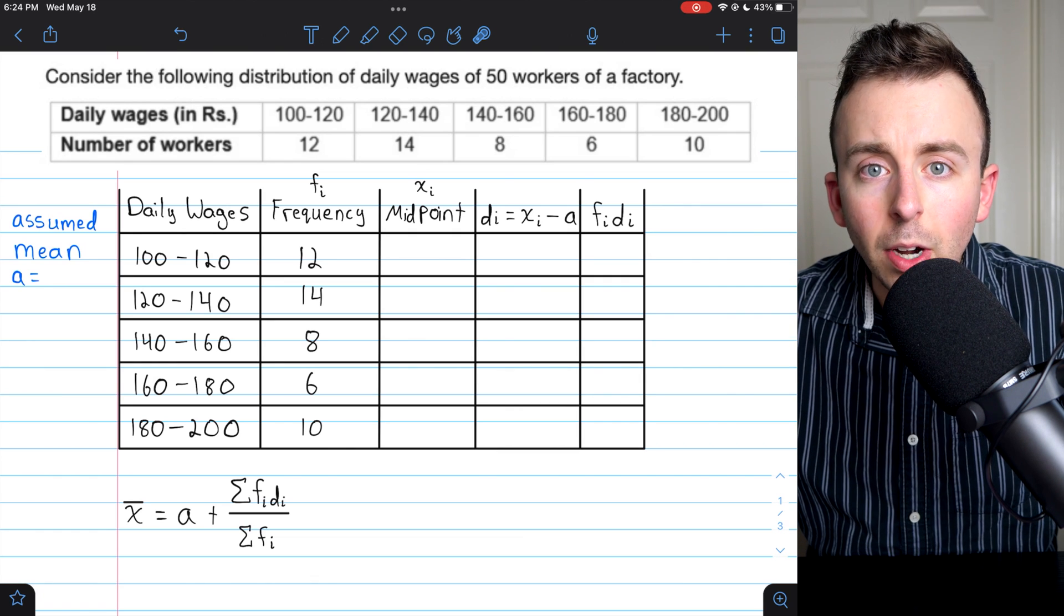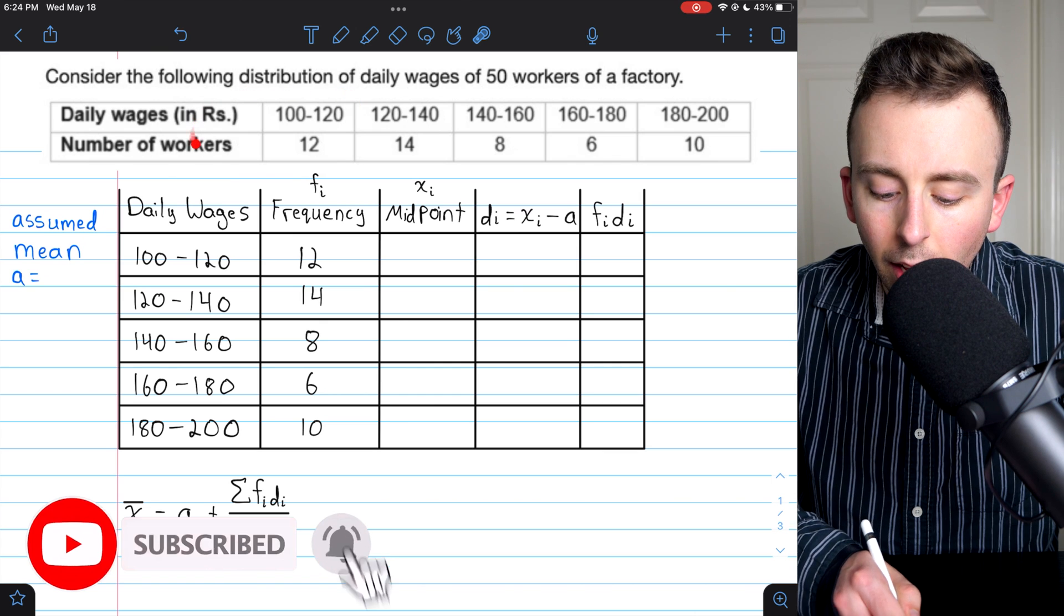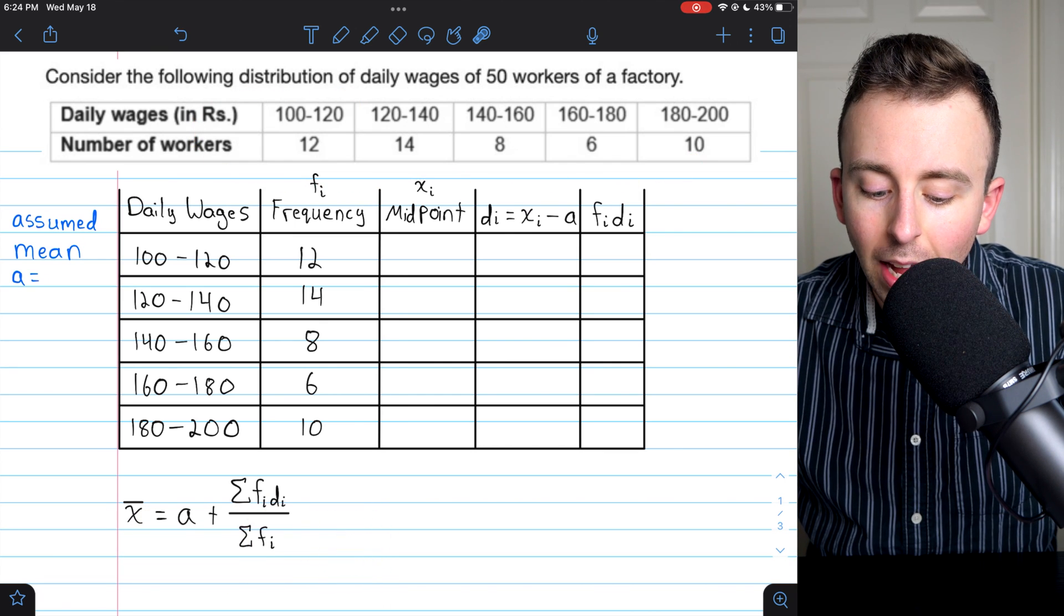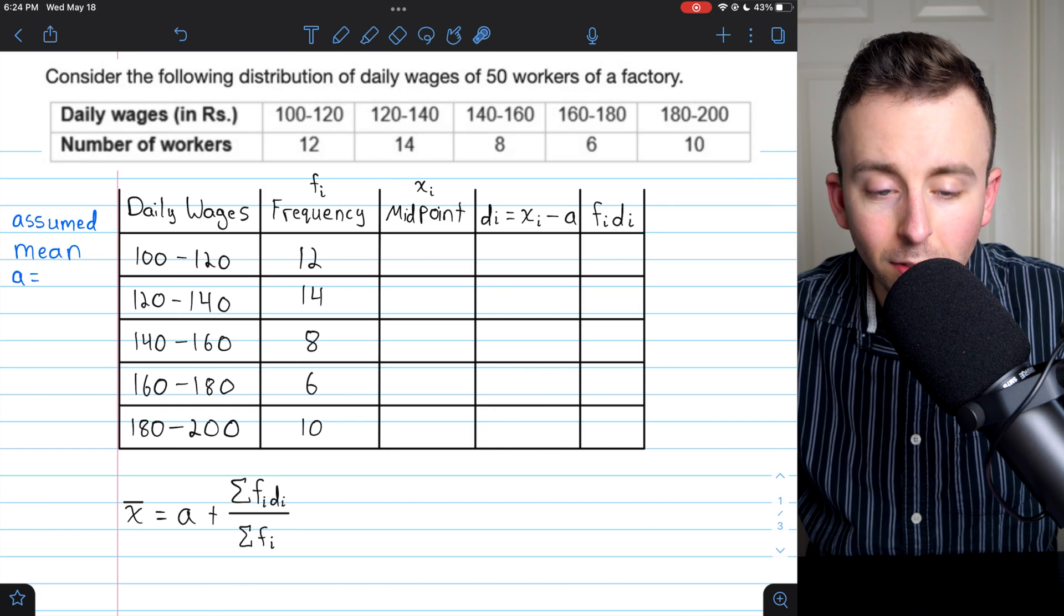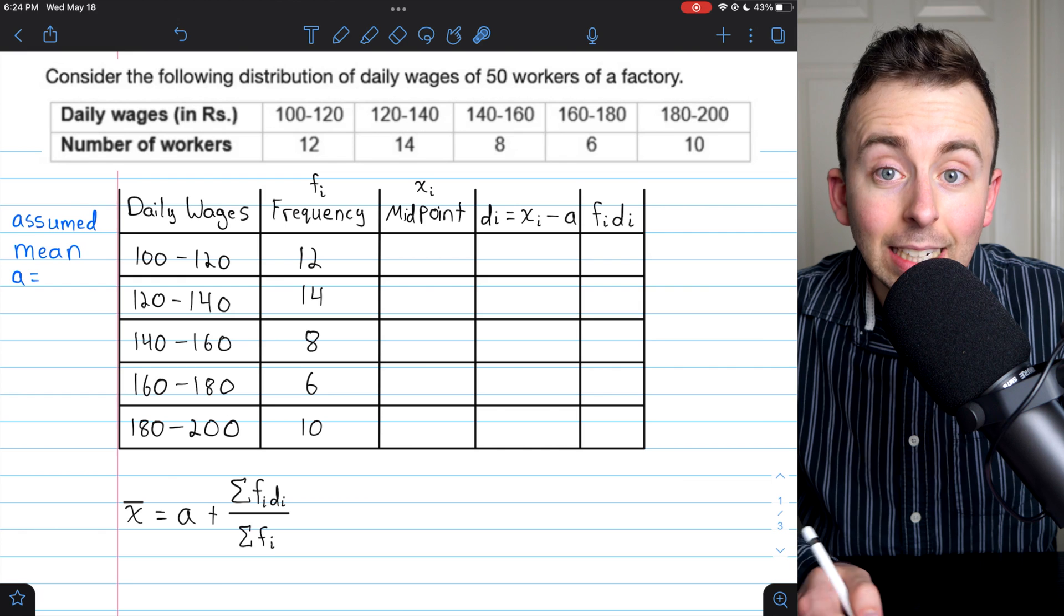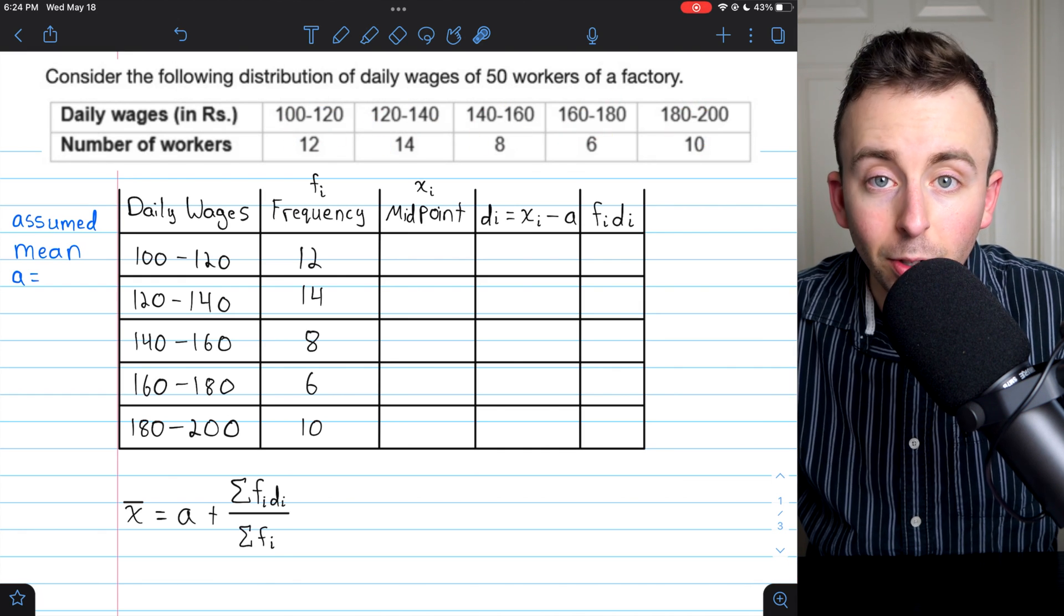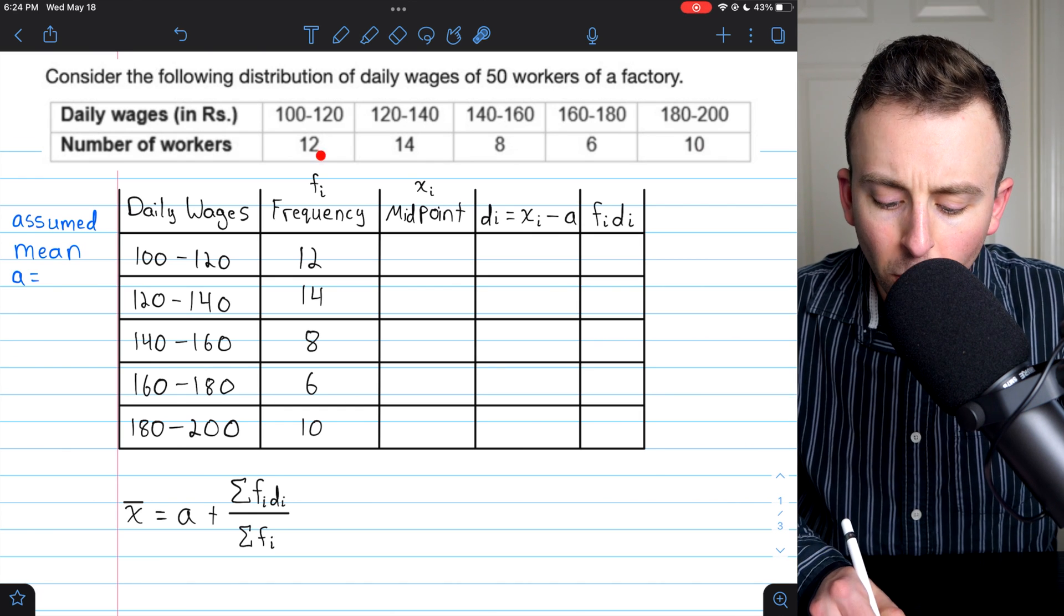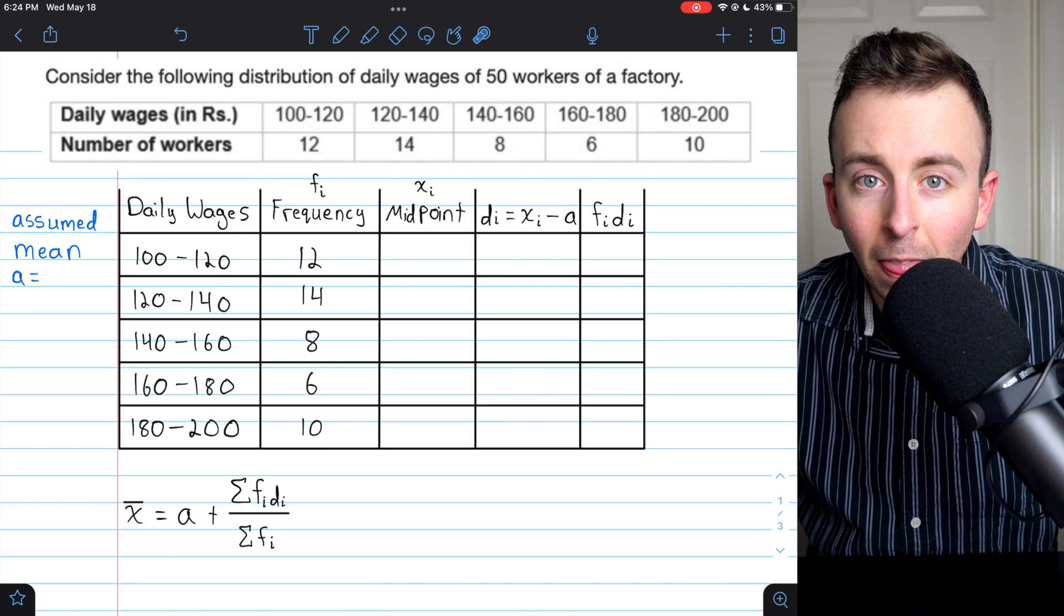Hi there. We're going to go over how to use the assumed mean method to calculate the mean of a grouped data set. Here is the data that we've got. We've got a distribution of daily wages of workers at a factory. And our data has been split into a few groups, a few intervals of daily wages. And in each group, we're told how many workers fit into that category.